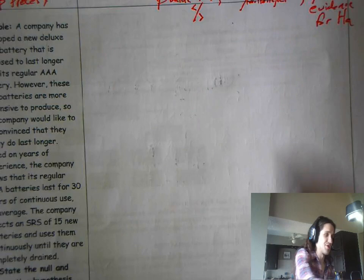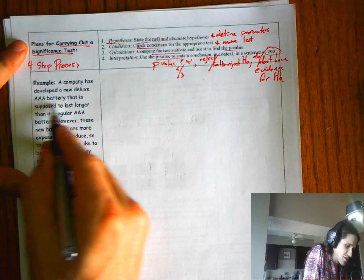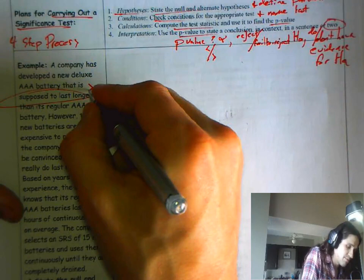If you don't reject the null, then you don't have evidence to conclude the alternative is true. So let's do a little four-step process with batteries. We don't have a whole process yet. So we're going to show this kind of separately. A company's developed a new deluxe triple A battery supposed to last longer.